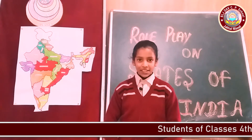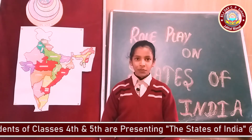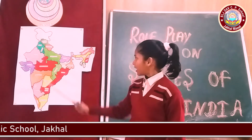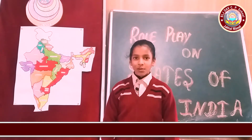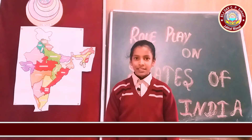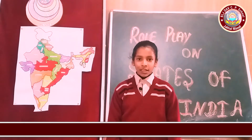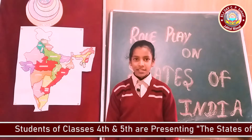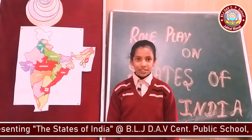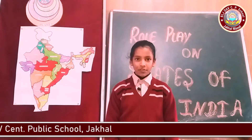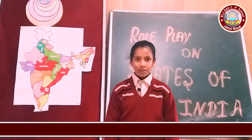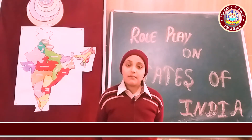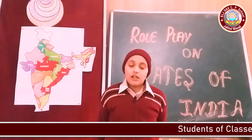Respected principal sir, teachers and my dear friends, a very good morning. I am Kashish from fifth standard and I am here today to talk about the wonderful state of India that is Rajasthan. Rajasthan is located in northwestern India and is India's largest state by area. Its palaces and forts are major attractions. Rajasthan is home to the Thar Desert, also known as the Great Indian Desert. It is one of the driest states of the country. Jaipur is the capital, which is a pink city. Rajasthan is also known as the land of Maharajas. Thank you.